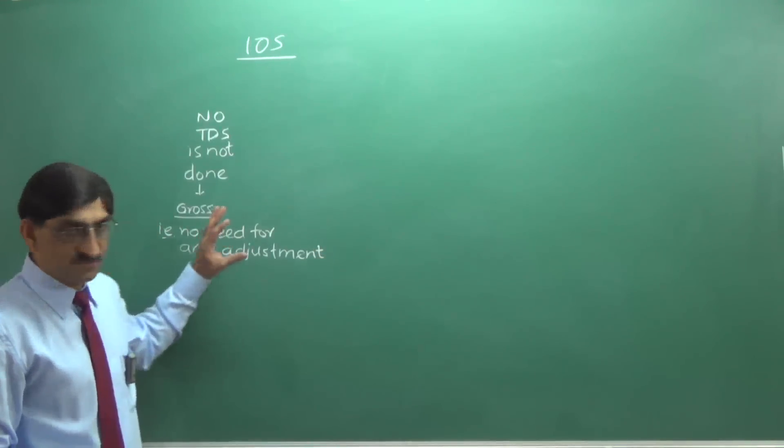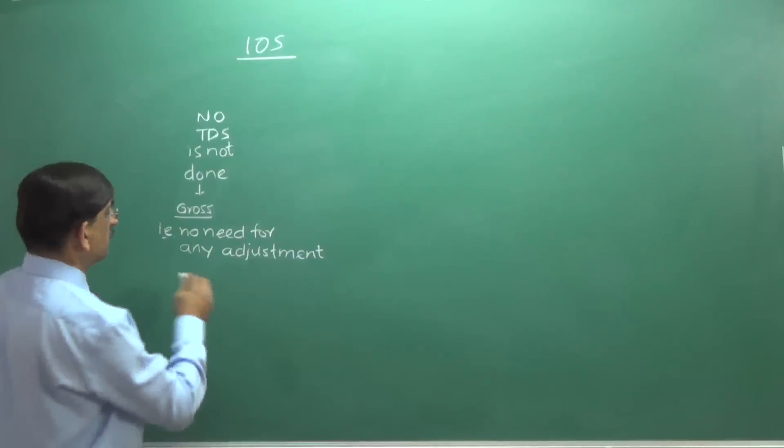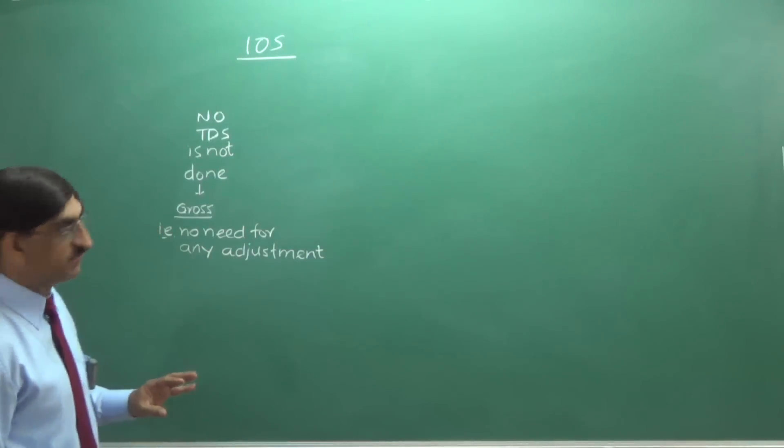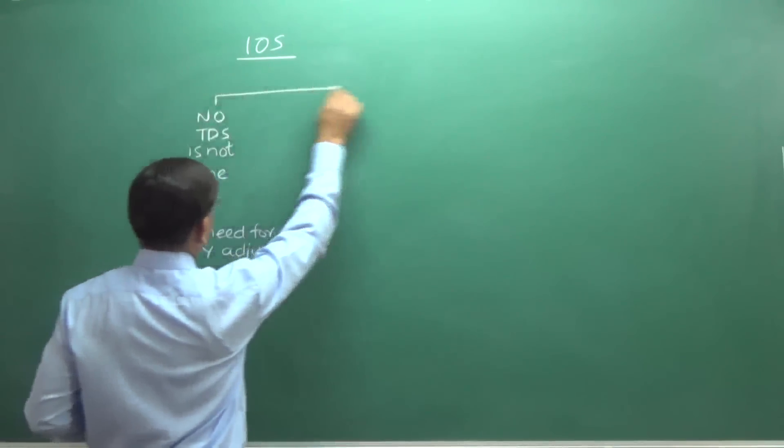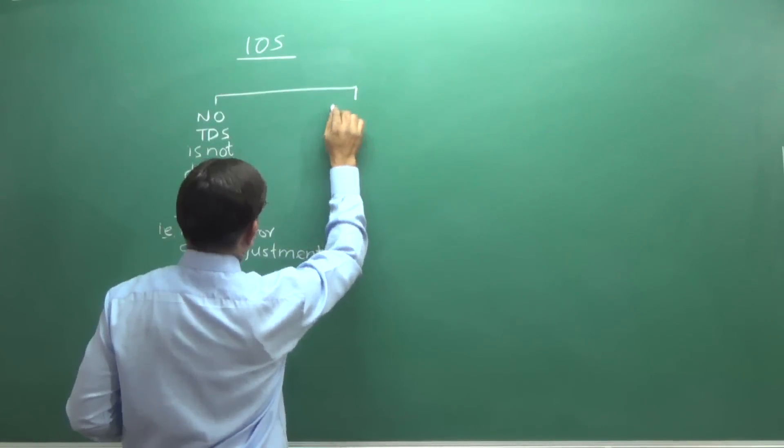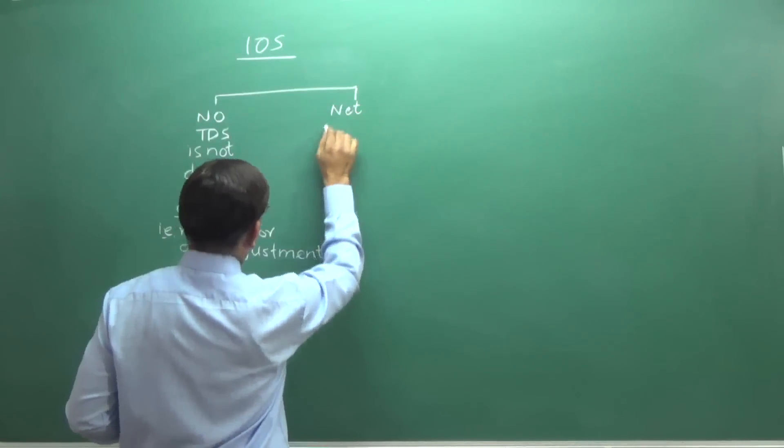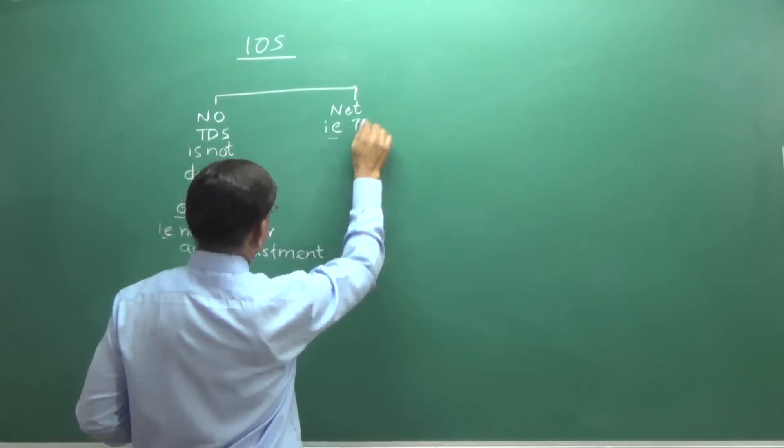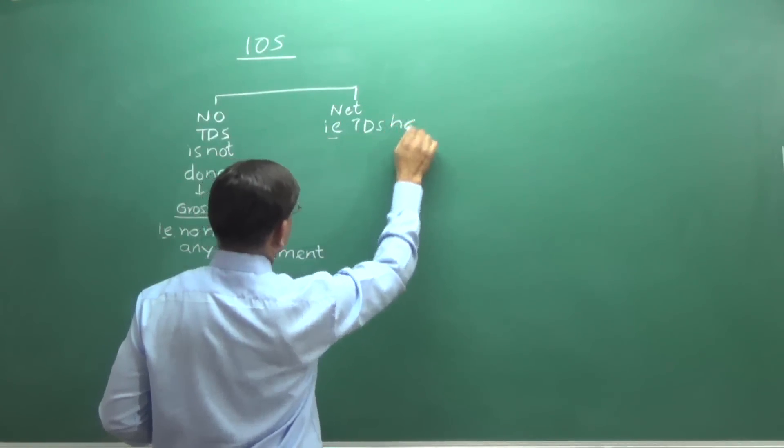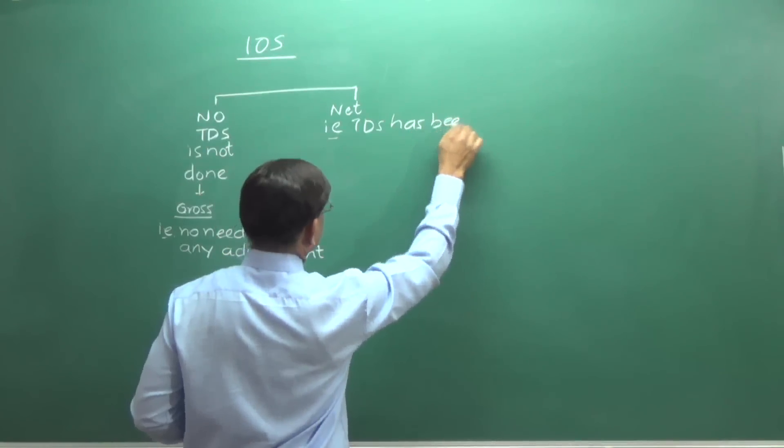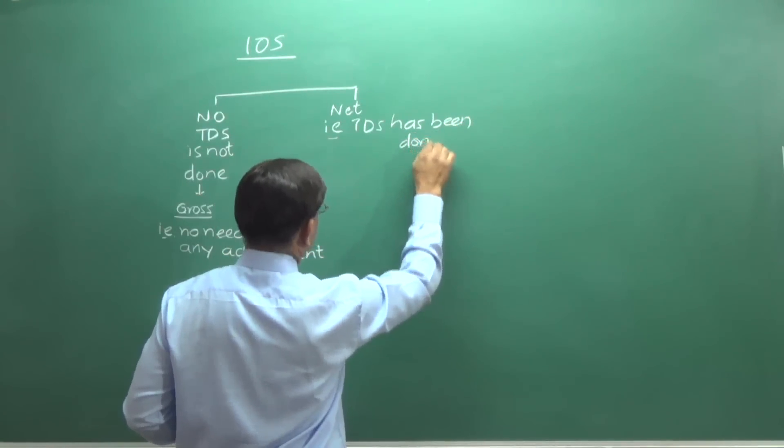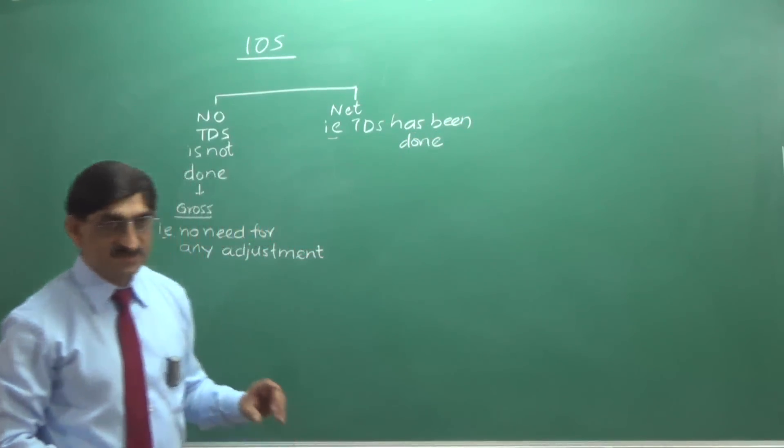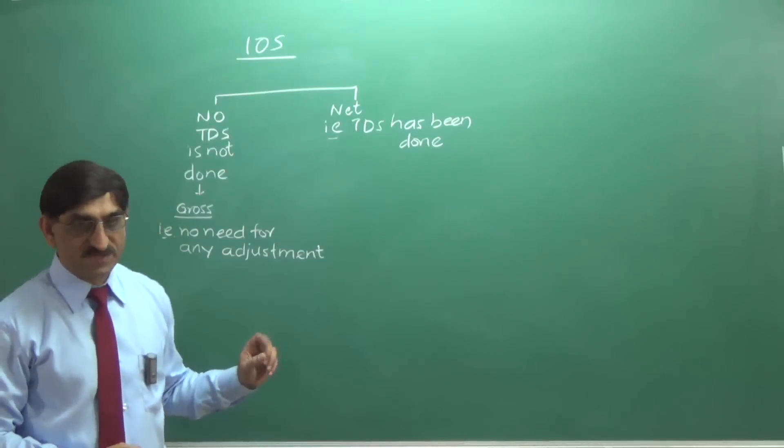Gross is the amount we should be considering for the purpose of income. If gross is given, it's good enough. You won't have to do anything else. In other words, if net is given, that means TDS has been done. There are various rates at which TDS would have been done.